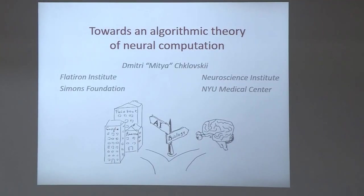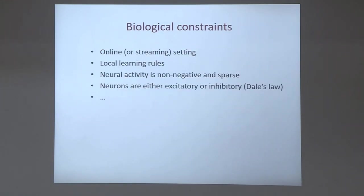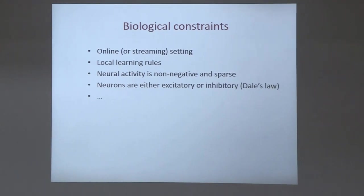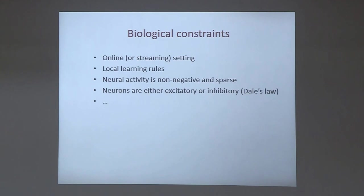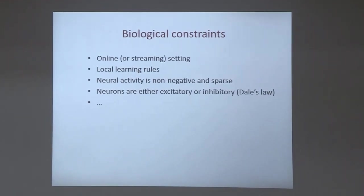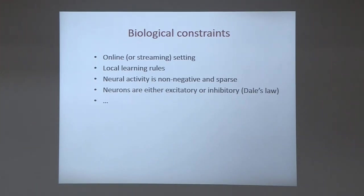What are these biological constraints we have to think about when coming up with a biological algorithmic foundation for neural networks? For biologists in the audience, this may be natural, but for computer scientists it's important to have this list in mind. Biological neural networks operate in the online setting. Learning rules have to be local in physical space. Neural activity is non-negative and sparse. And neurons are subdivided into excitatory and inhibitory.